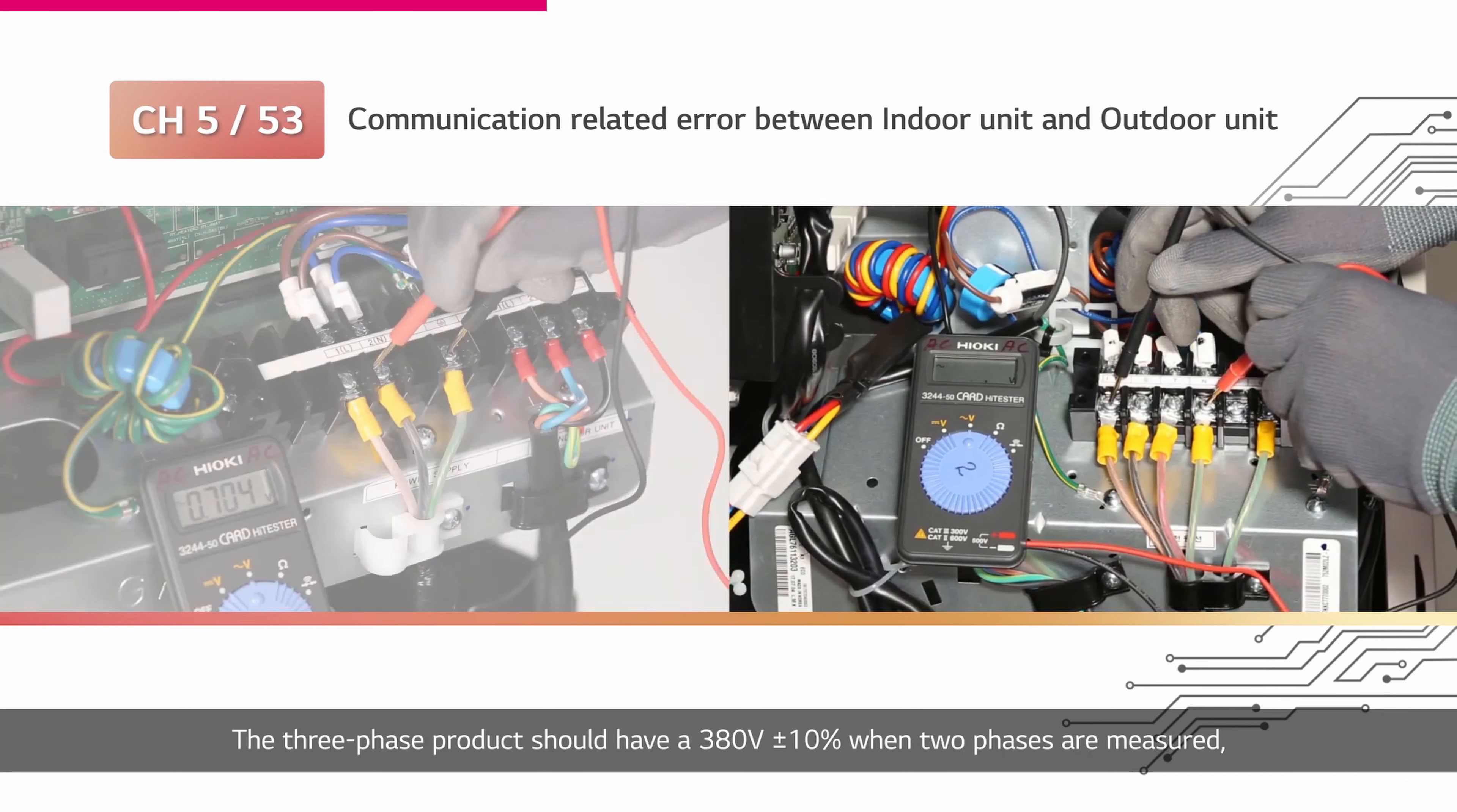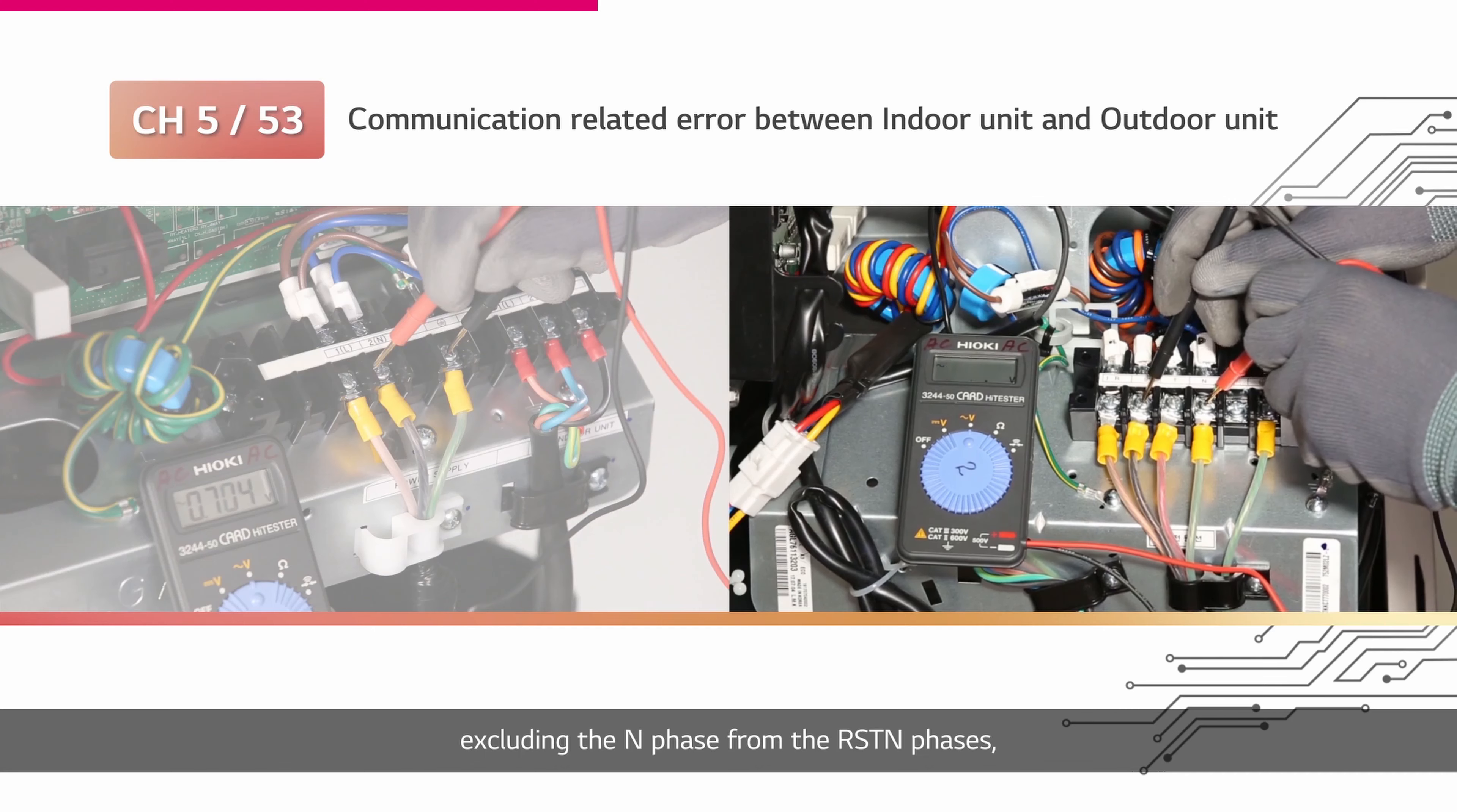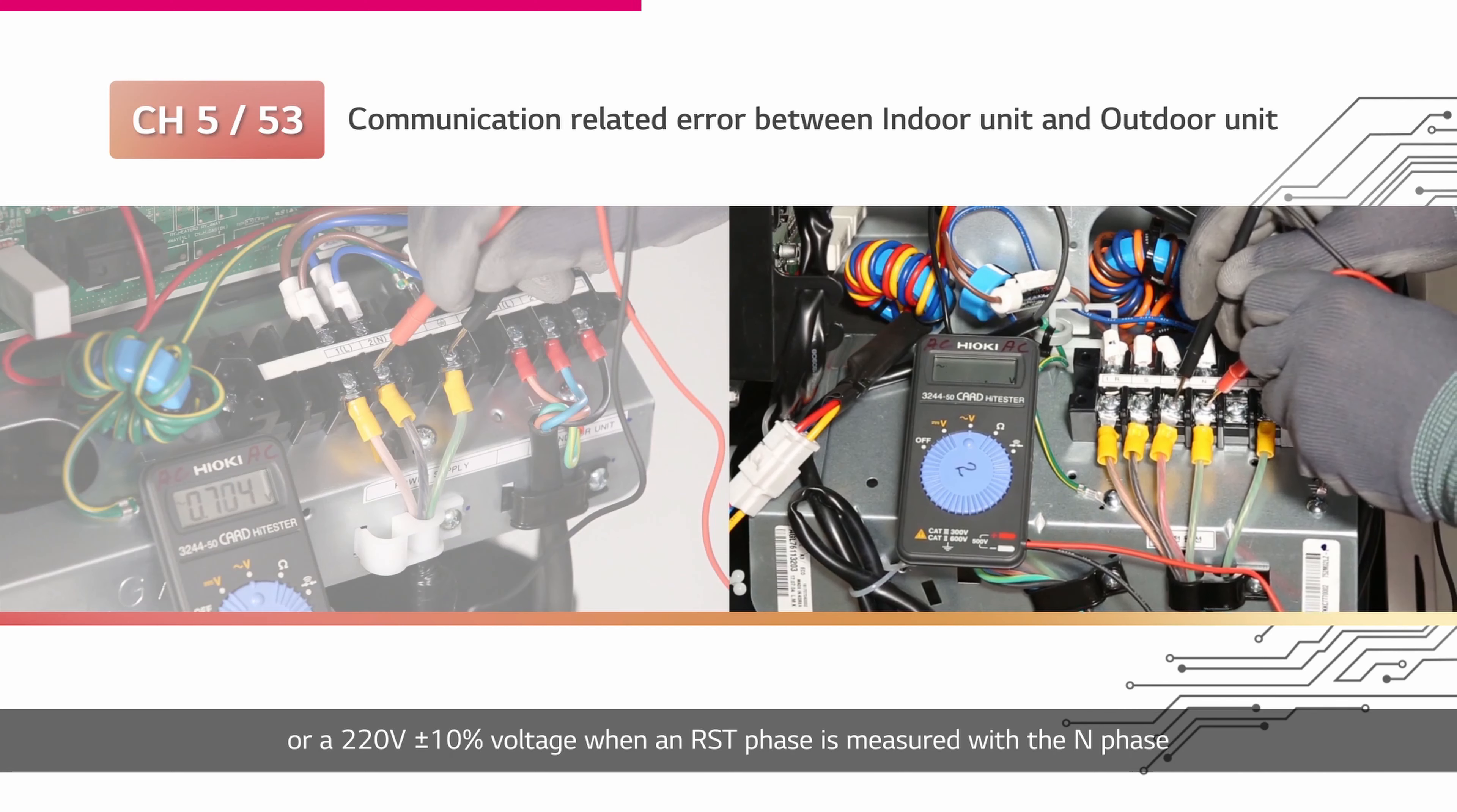The three phase product should have 380V plus minus 10% when two phases are measured, excluding the N phase from the RST N phases, or 220V plus minus 10% voltage when an RST phase is measured with the N phase.